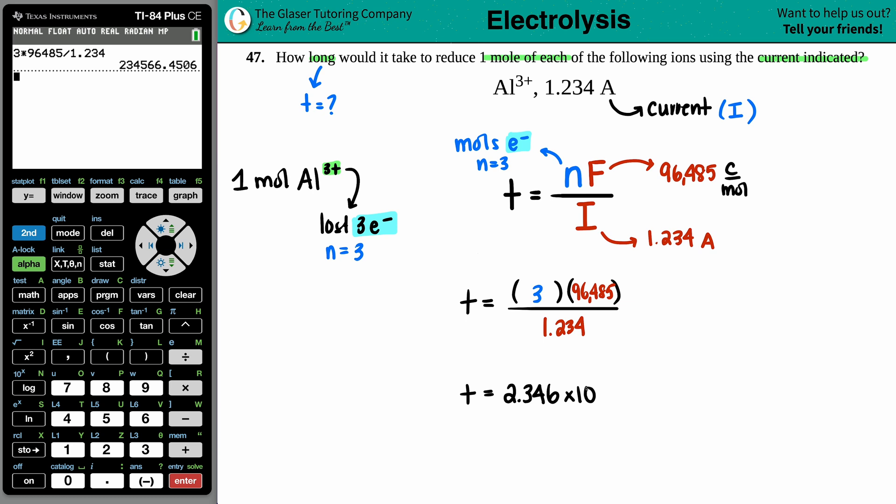And then I'm going to say times 10 to the 1, 2, 3, 4, 5. And for this formula to work, it's always going to be coming out in seconds.